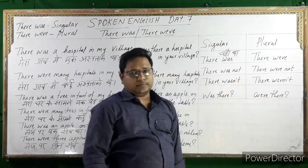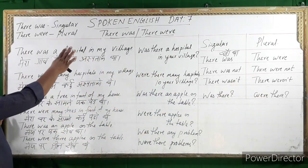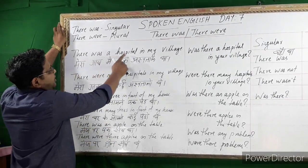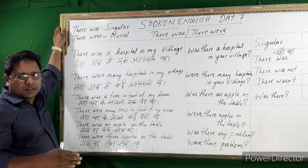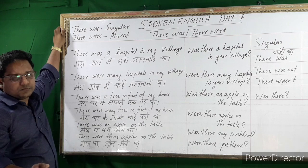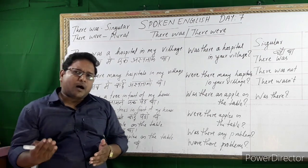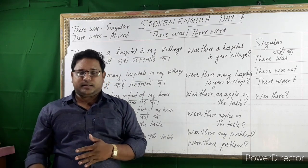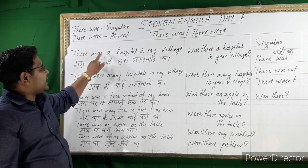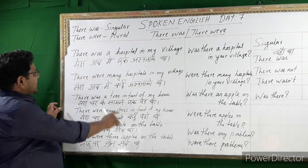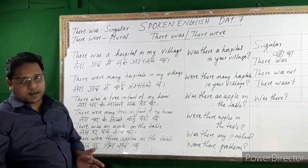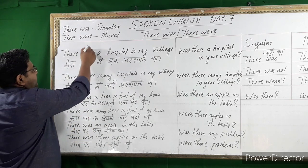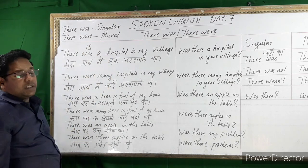I wrote some sentences here — look at them. 'There was a hospital in my village.' In the last class we studied 'there is' or 'there are,' which is the present form. 'There was' or 'there were' is used in the past. 'There was a hospital in my village' — instead of 'there is a hospital in my village,' we use the past form.